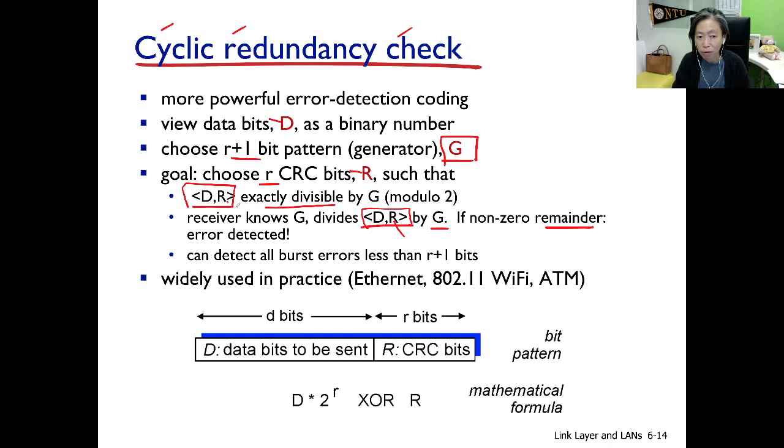Well, the whole sequence together is exactly divisible by G. If there are no bit errors, then the remainder should be zero. But that is also saying, if the remainder comes out non-zero, then there must be some errors somewhere in the sequence. So this is how CRC works.